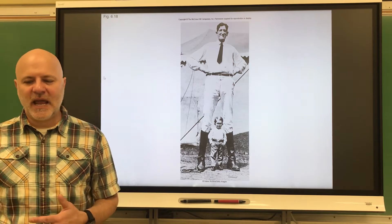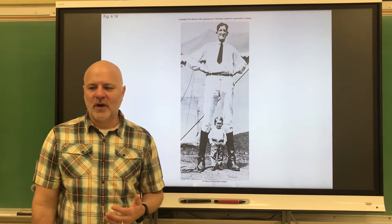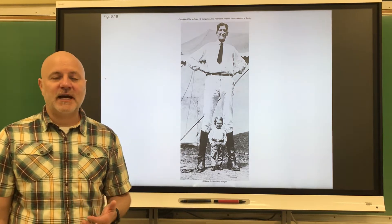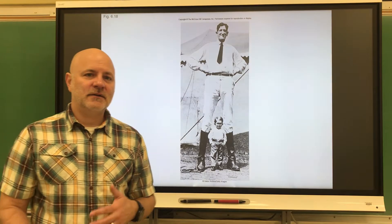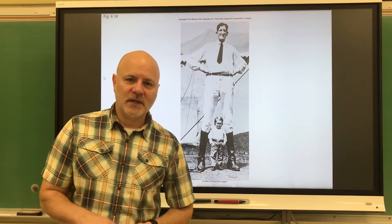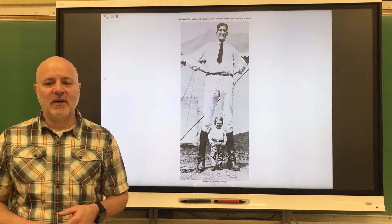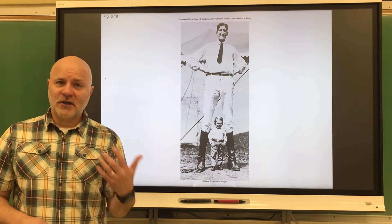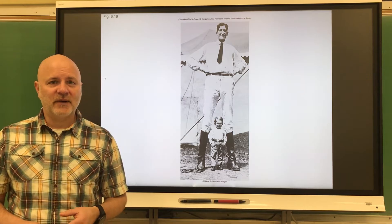Next is osteomalacia, a softening of the bones as a result of calcium depletion. This occurs in adults, and both rickets and osteomalacia are caused by a vitamin D deficiency. Vitamin A is also required for normal osteoblast and osteoclast activities, and it too is added to fortified milk.